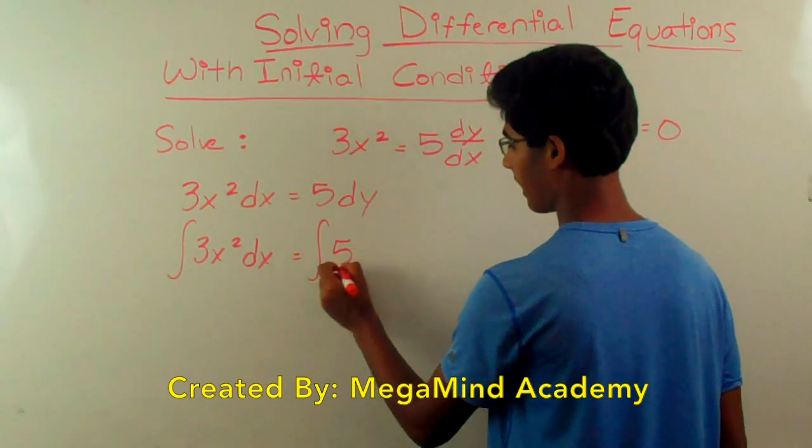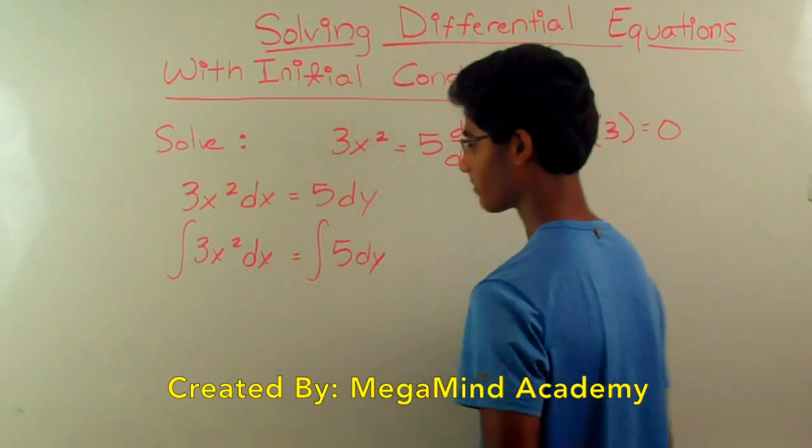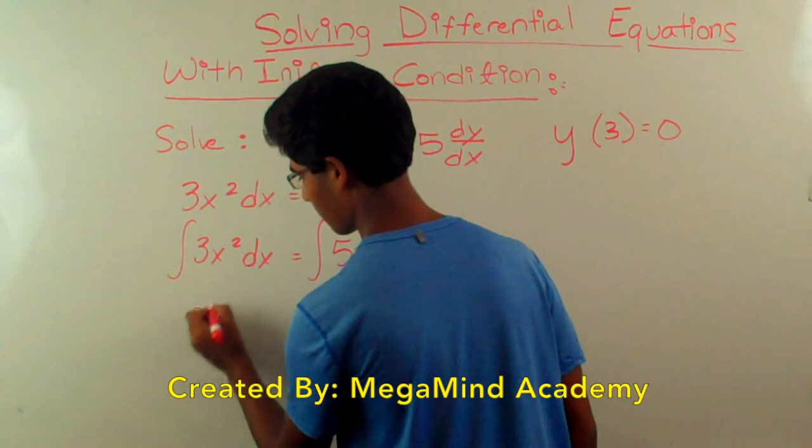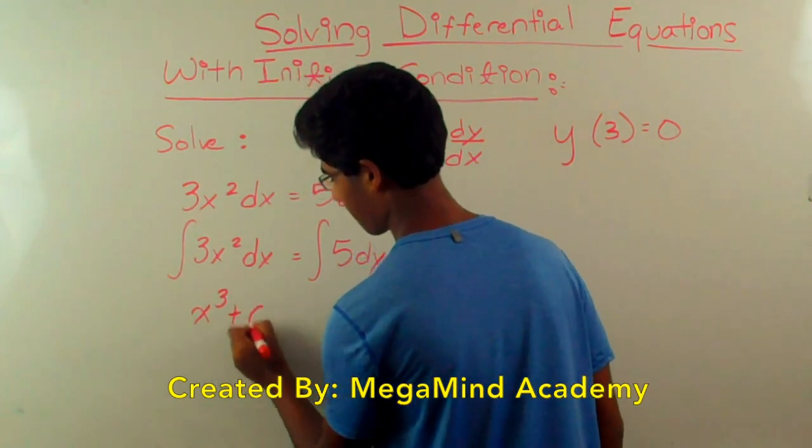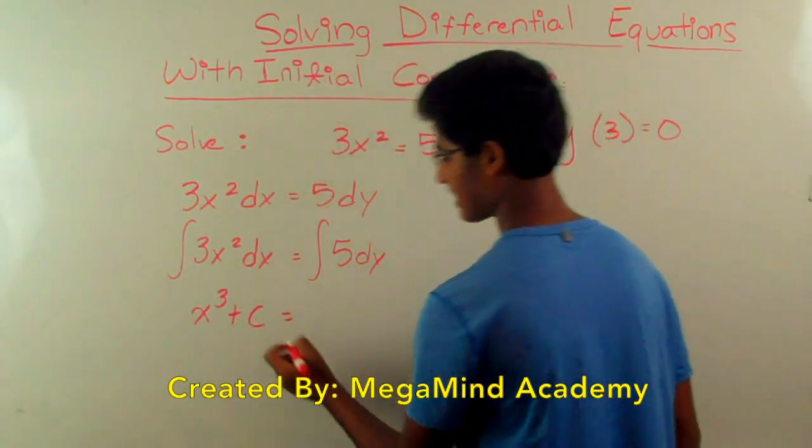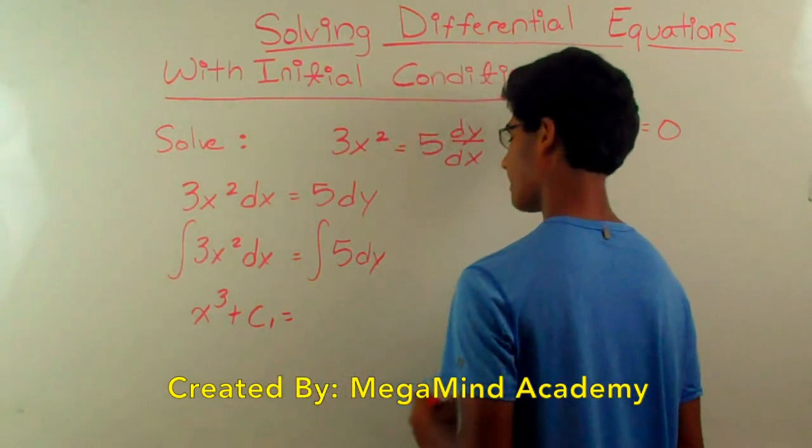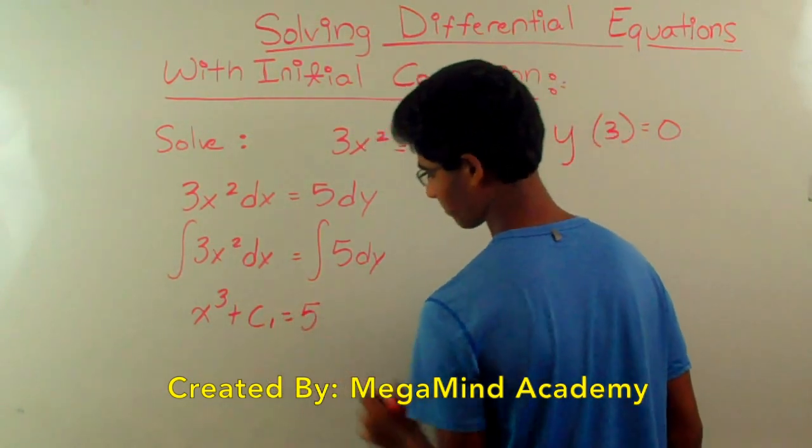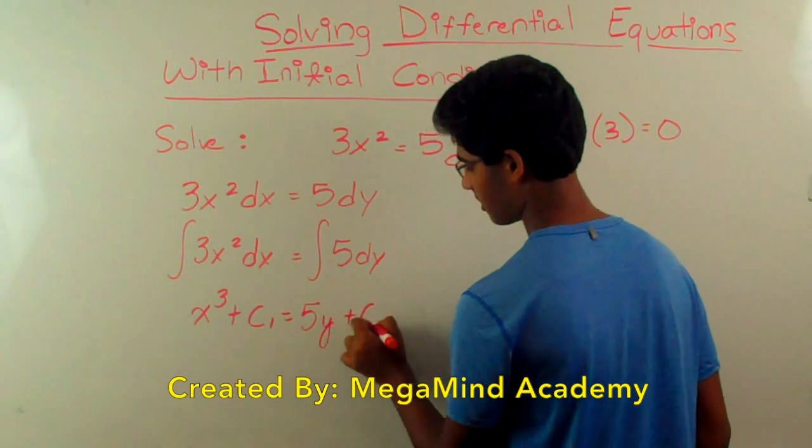So the integral of 5 dy, this gives us x cubed plus c, and let's say this is c1, is equal to 5y plus c2.